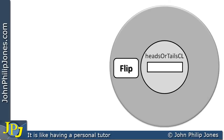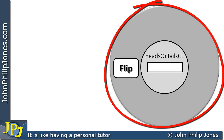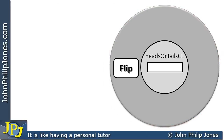Here we can see a suitable model to represent the flipping of a coin. We can see it has at its center a variable that I've called headsOrTailsCL, and here we can see there's a method called flip.